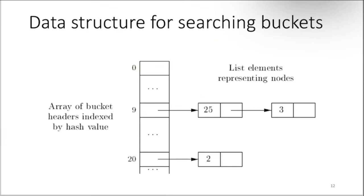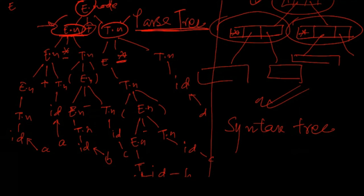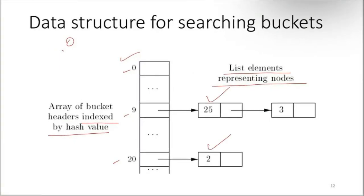For the data structure for searching buckets, we have the main array of the DAG. The index can be maintained using an array of bucket headers indexed by hash value — so the index can be chosen using hashing. For multiple operators, left operand, right operand, and all these things, it can be used as a list element representing a node — a linked-list kind of configuration. One node, like e.node, is basically pointing to two different nodes. If they are leaf nodes or identifiers, it is not a big issue, but since they are nodes, we have to use such a configuration.